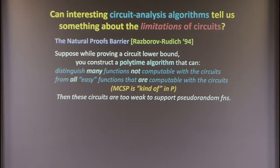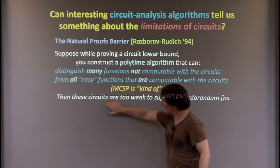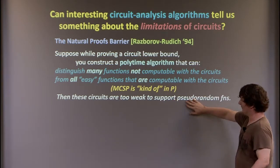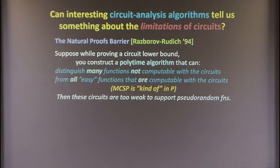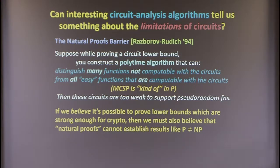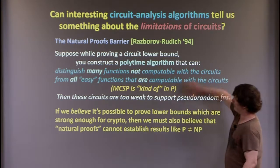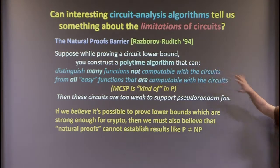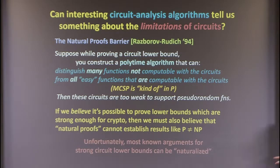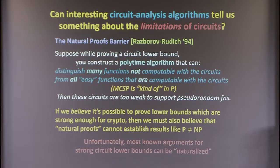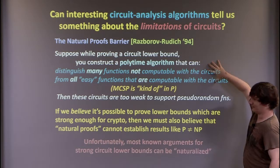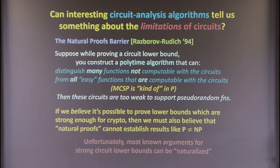We believe that even very low depth circuits like constant depth majority gates can support pseudorandom functions. So there shouldn't be polynomial time algorithms that can distinguish many functions computable with those circuits from all the easy ones. If we believe it's possible to prove lower bounds strong enough to support cryptography, then natural proofs — which construct these polynomial time distinguishing algorithms — are not going to be able to prove things like P ≠ NP. Most known arguments for strong circuit lower bounds actually have a polynomial time algorithm embedded in them.